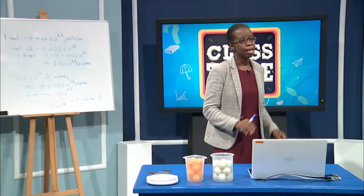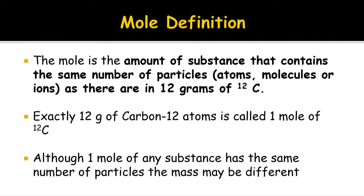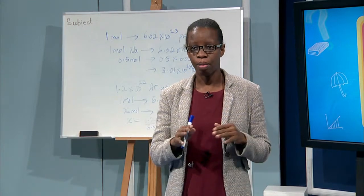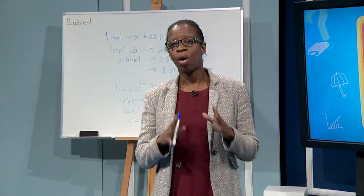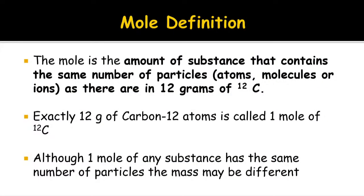By definition, a mole is the amount of substance that contains the same number of particles — 6.02×10²³ particles. These particles can be atoms, molecules, or ions, as there are in 12 grams of carbon-12. So 12 grams of carbon-12 is assigned as one mole, and a mole of any substance will have the same number of particles.